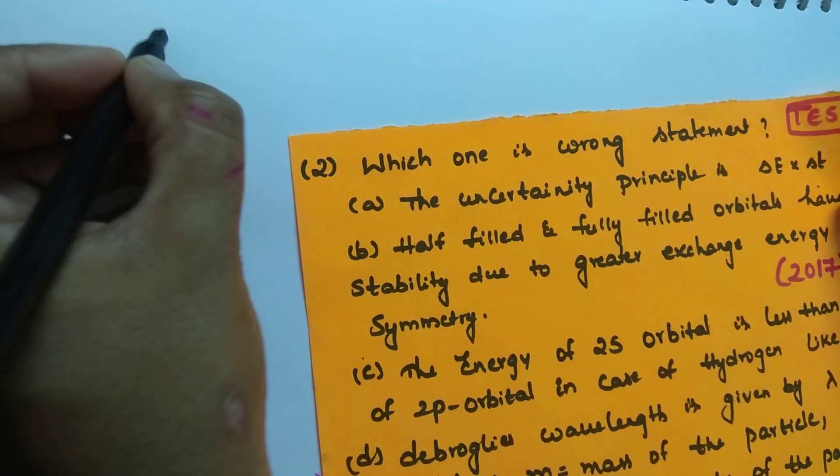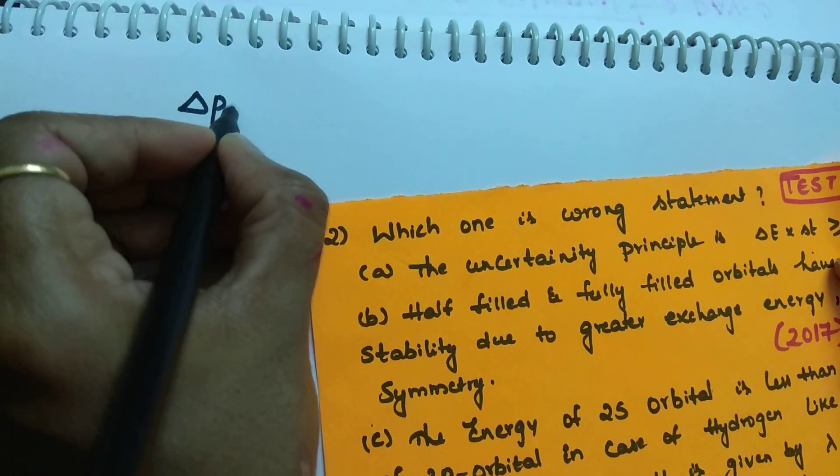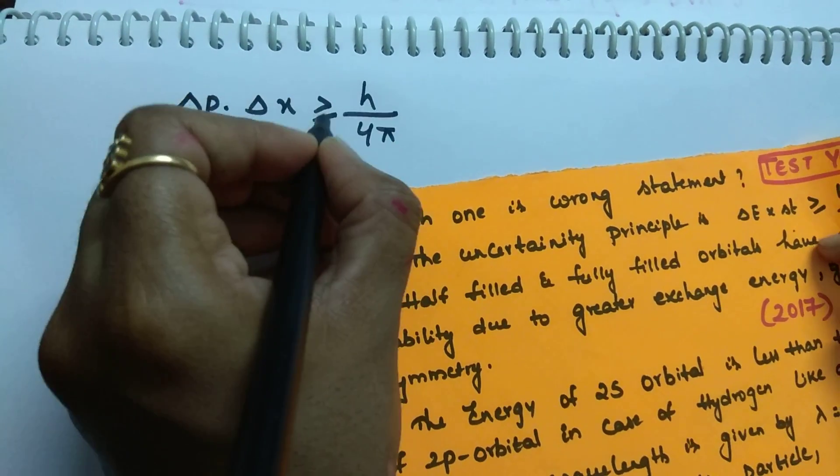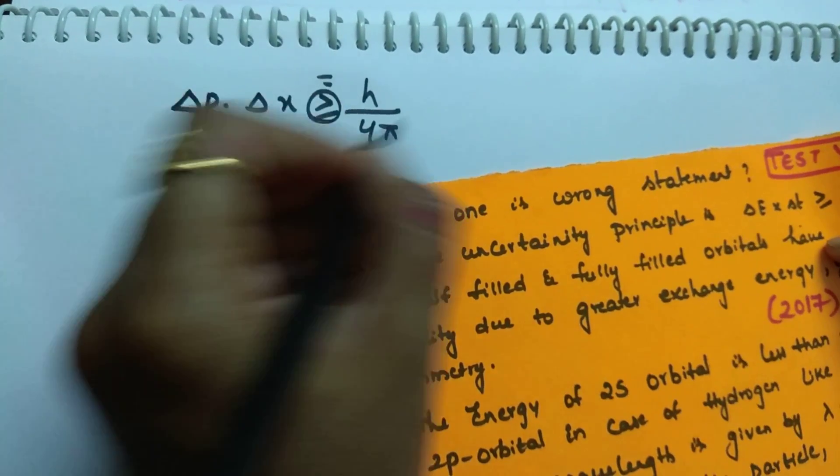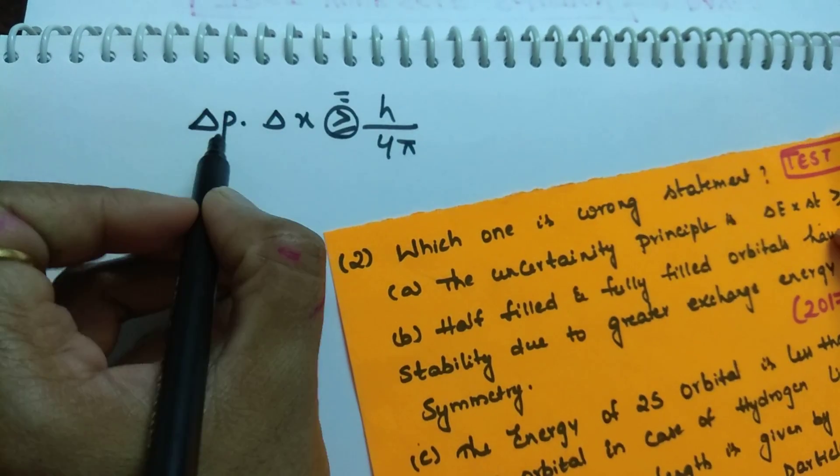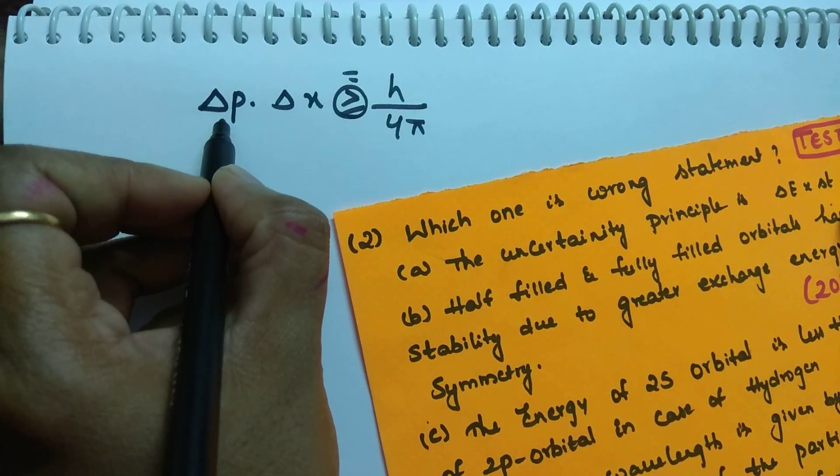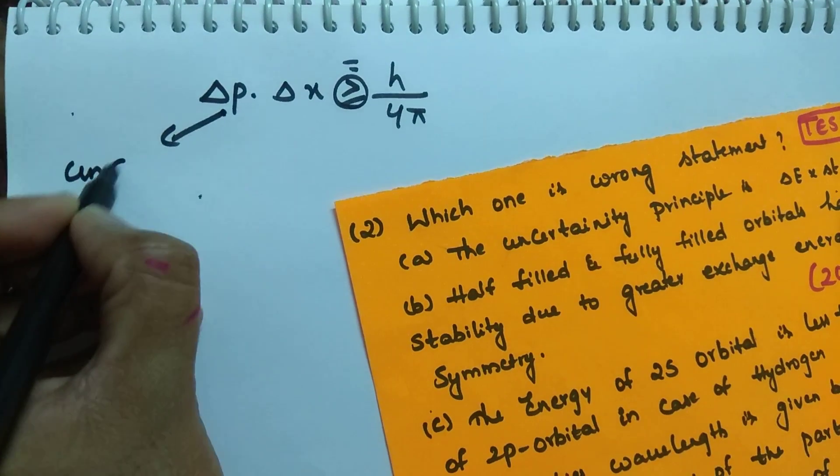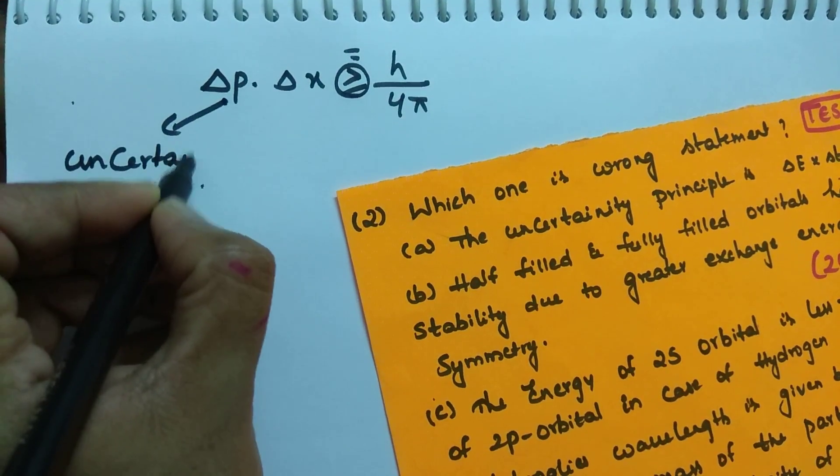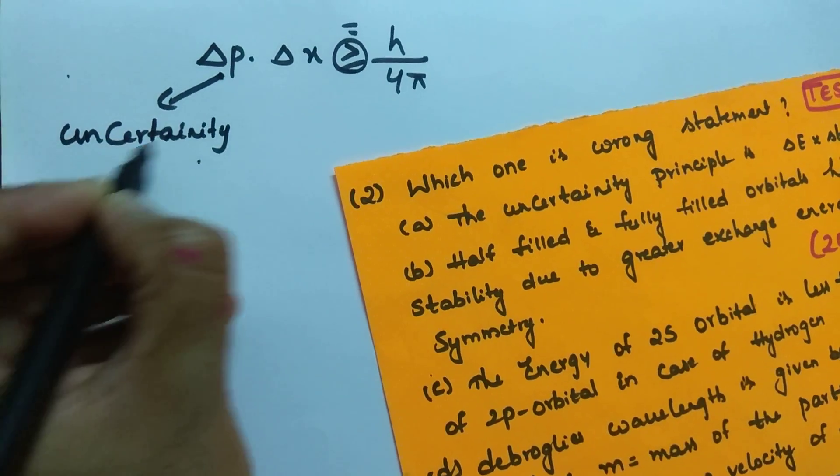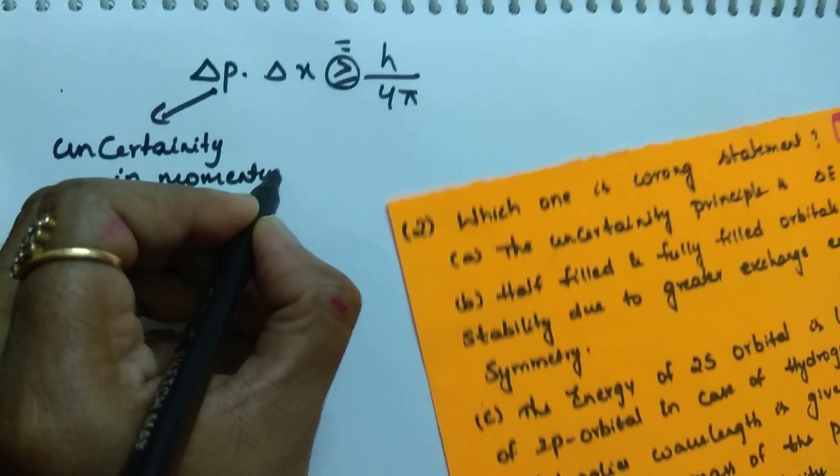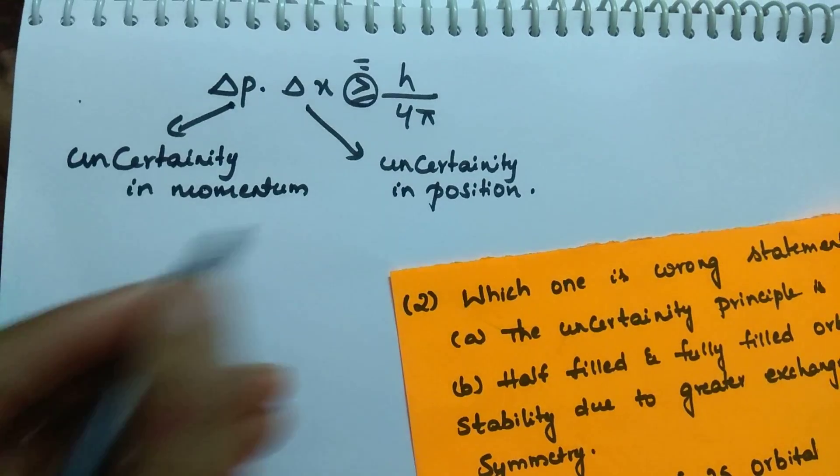Right? The formula for this is delta P into delta X is greater than or equal to H by 4 pi. But, when you are solving the problem, you will use equal to and you will solve the numericals. Here, what is delta P? Uncertainty in momentum. This is uncertainty in momentum and this is uncertainty in position.